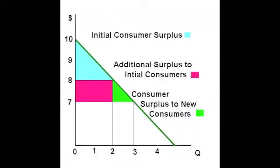Now say we move to a lower price of seven dollars — we will have more consumer surplus. We have the initial area in light blue where the consumer surplus is sixteen, plus the additional surplus to initial consumers shown in the pink area, and now we have the additional surplus to new consumers shown in the green area. So the pink area is the additional surplus to the initial consumers, and the green area is the consumer surplus to new consumers.